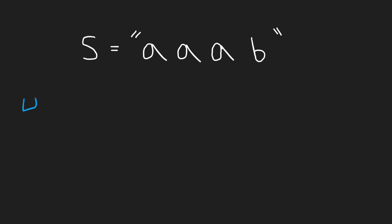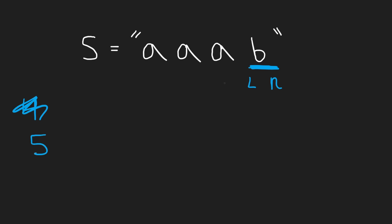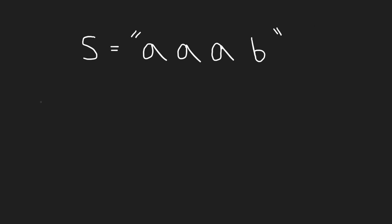Our count of palindromes is at four. Moving to the last position: it itself is a palindrome, so we change our count to five. We try to expand left and right, but we go out of bounds to the right side, so we're done. In total we found five different palindromes, but it turns out we actually missed a couple — we missed two palindromes of length two.